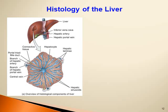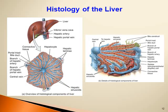There are sinusoids separating the hepatic laminae, called hepatic sinusoids. Blood flows in the hepatic lobule from the portal triad at the periphery towards the central vein, while bile flows in the opposite direction — from the center towards the portal triad.